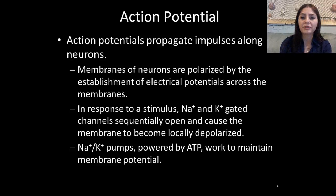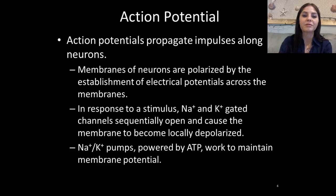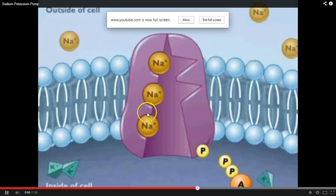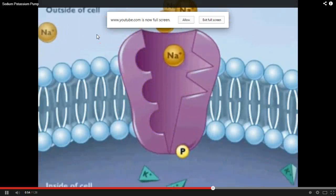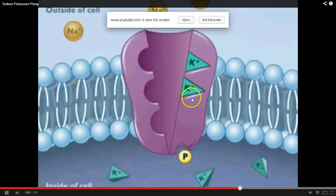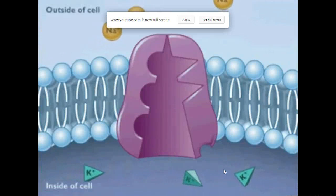In response to a stimulus, the sodium and potassium gated channels sequentially open, causing the membrane to become locally depolarized — meaning there's no longer going to be a net charge; it gets to zero. Eventually we actually get above zero into positive charges. The sodium-potassium pumps are powered by ATP, which is cellular energy, and they work to maintain the membrane potential. Three sodiums come into the sodium-potassium pump and are released into the extracellular fluid, while two potassiums are transferred into the cellular fluid.